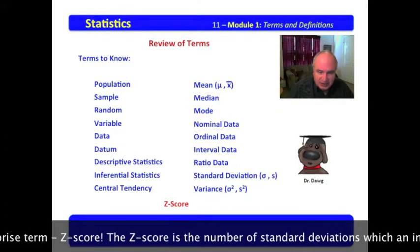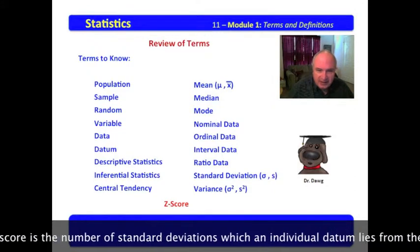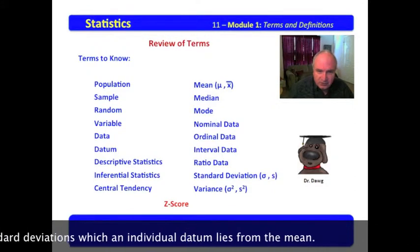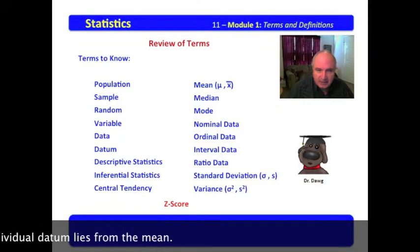Z-score. The Z-score is the number of standard deviations which an individual datum lies from the mean.